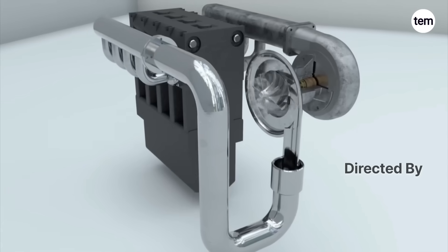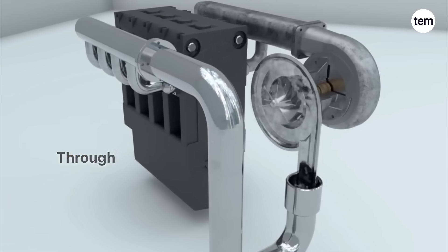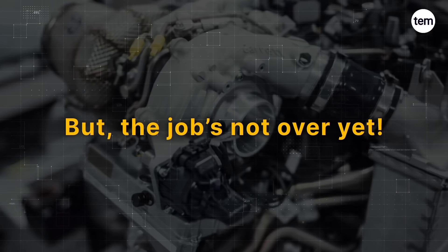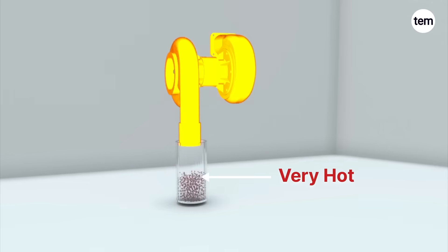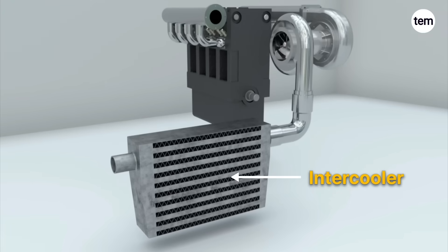This compressed air is directed by the compressor housing into the engine's intake manifold through a pipe. But the job's not over yet. The compressed air can get very hot, and that's where an intercooler comes into play.